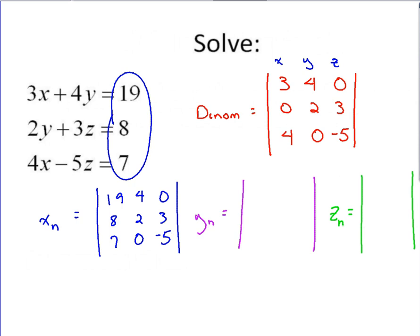For y, we're going to take this y column out, replace that with 19, 8, and 7. And then our other two columns will stay the same.